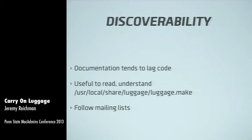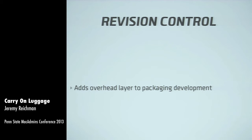An important point: the luggage.make make file is included over and over in our examples, and the reason is that we include its commands so we don't have to put the exact same commands in our make files again — it's a lot of code reuse. Another disadvantage is that adding version control to your packaging process puts another layer in. If you're just a small shop or one person, revision control may not be worthwhile. There have been conference sessions about Git, and Mercurial is a very similar tool.